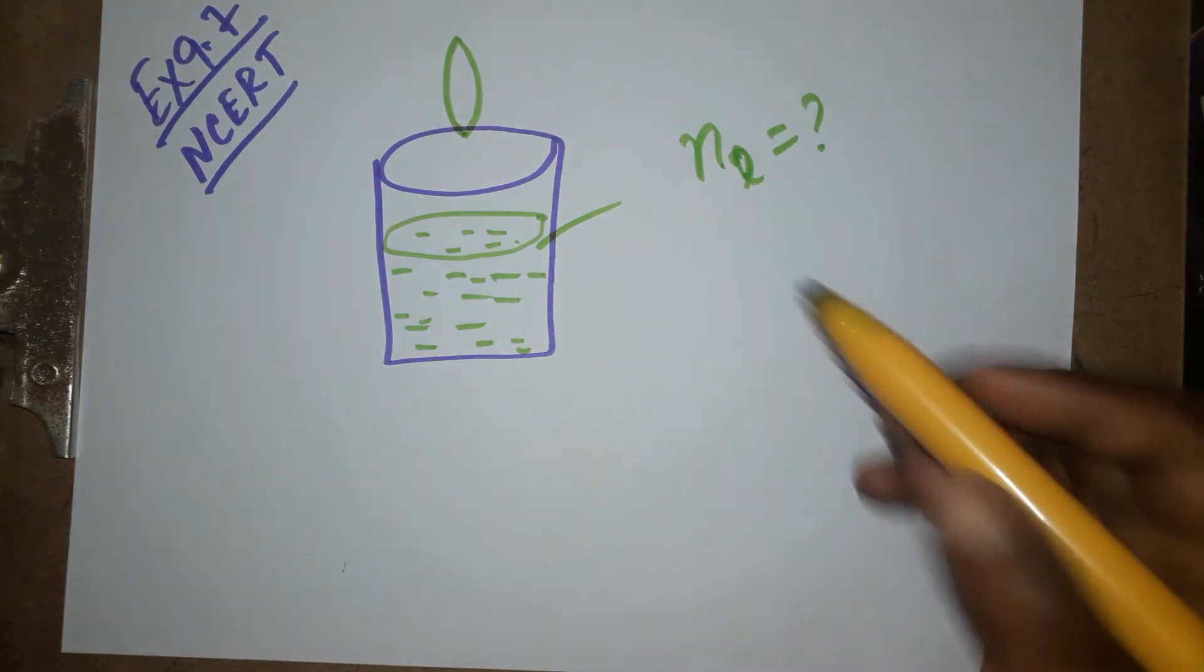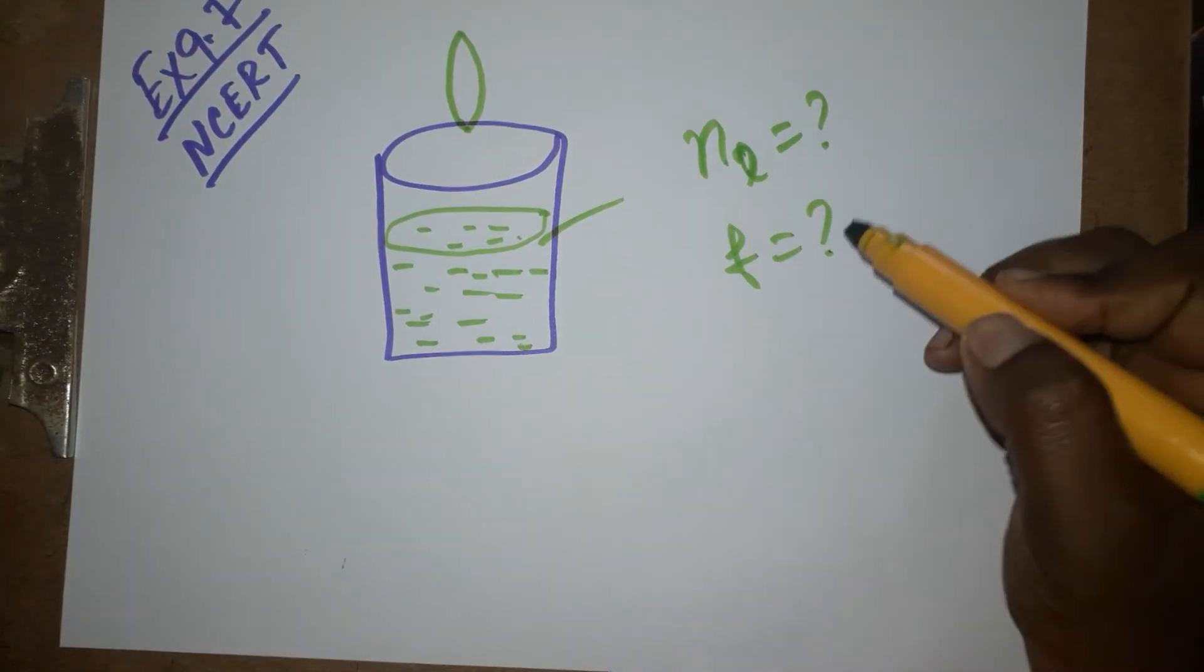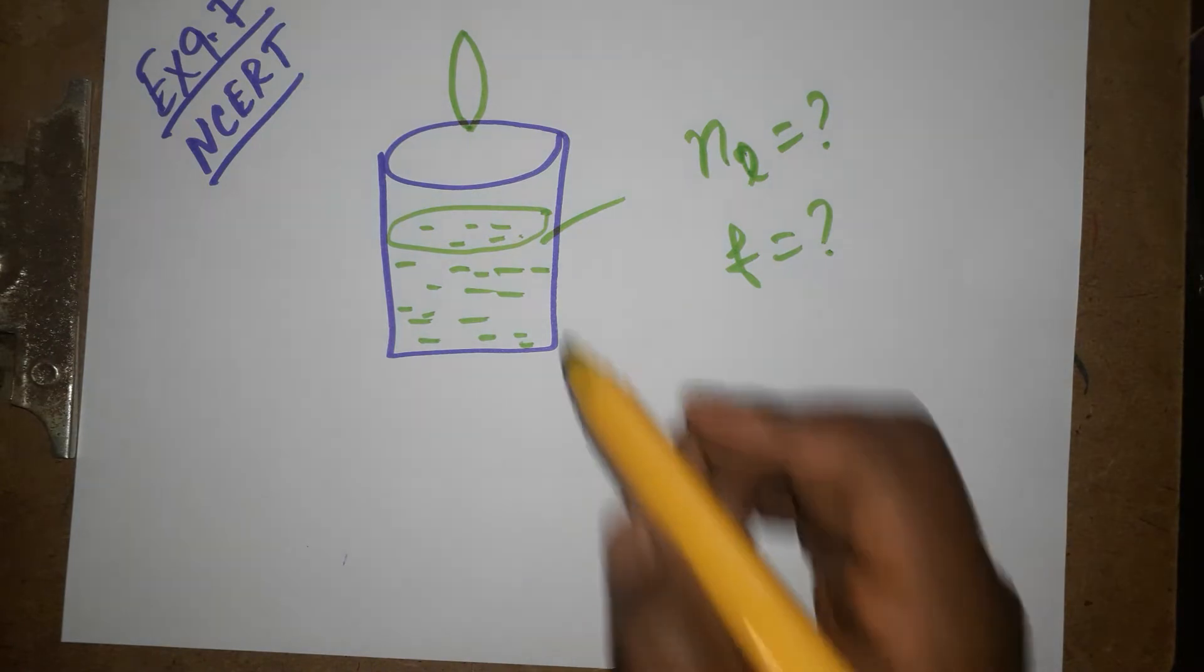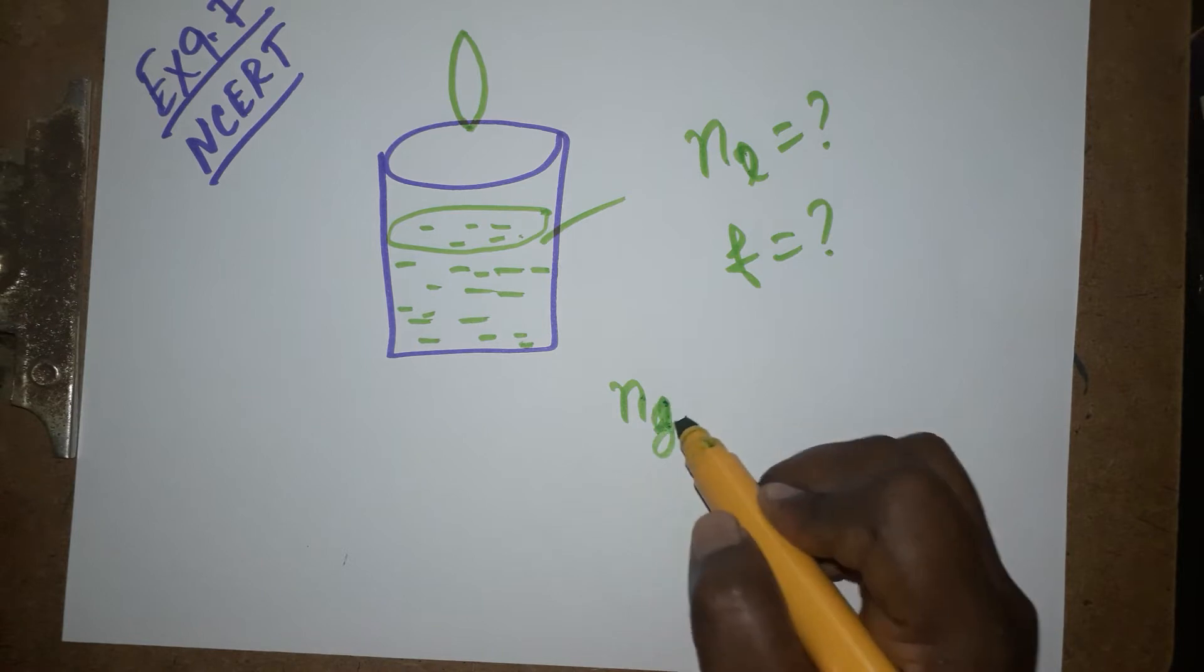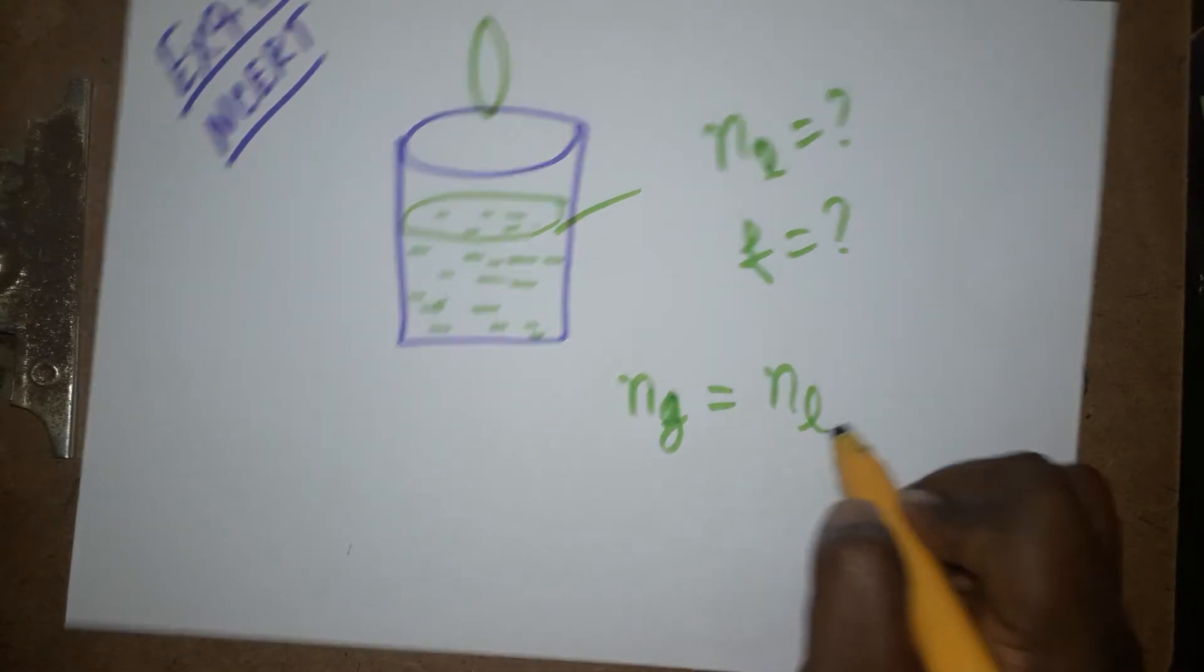They also want the focal length. It's actually a very simple question. When it's getting disappeared, the lens refractive index equals the glass refractive index, so both are the same.